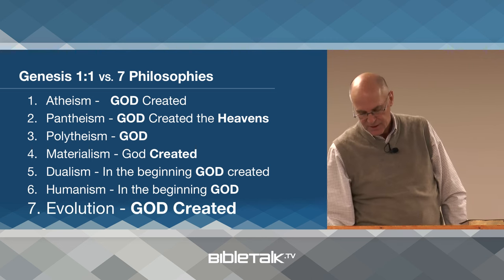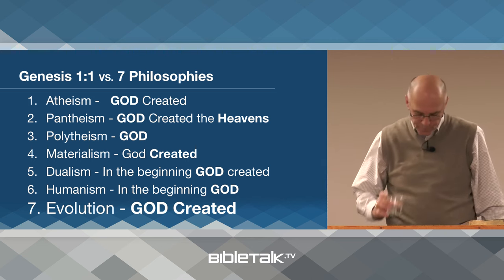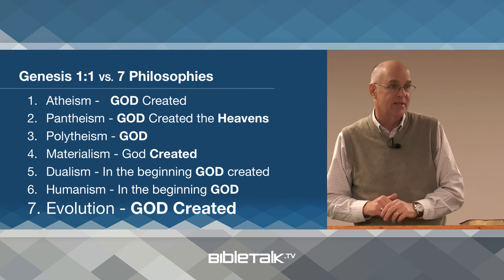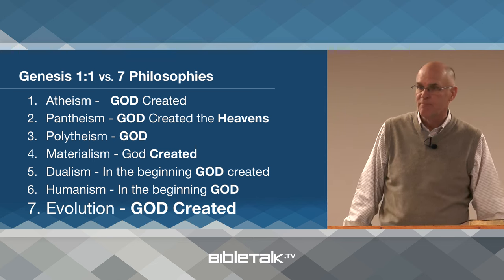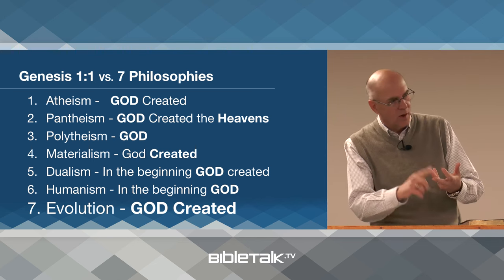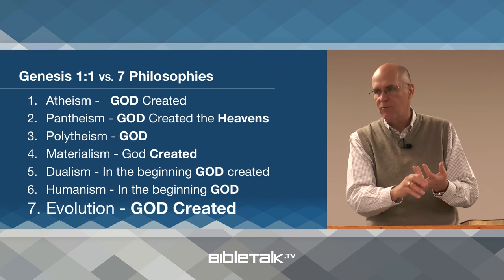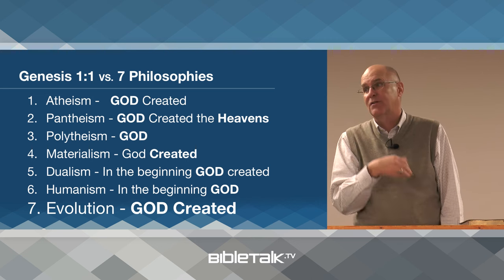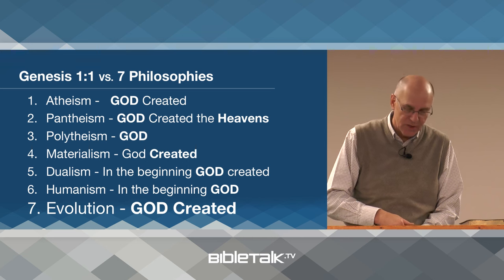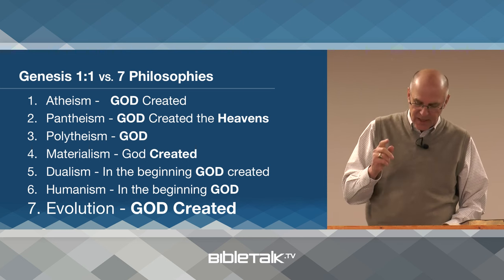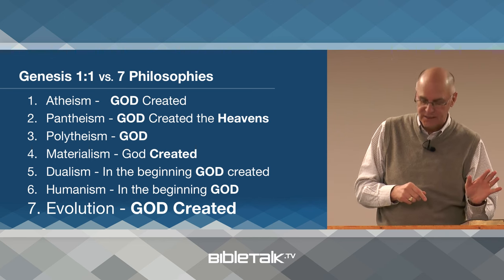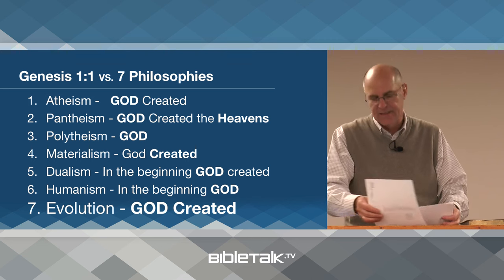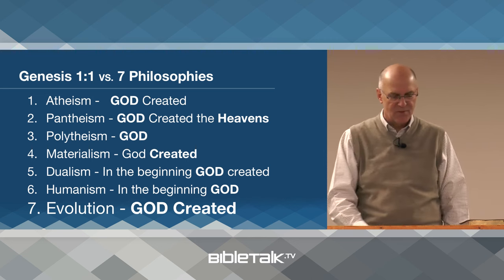And then there's evolution — our most prevalent idea today. It says that time and chance working on eternal matter is responsible for the universe. If you shrink it down: time and chance working over billions of years on matter that was always there has produced what we have today. But Genesis 1:1 says that in the beginning — a specific time — God, not chance, created the heavens and the earth. It didn't evolve; He created it. Not the same thing at all.